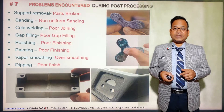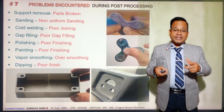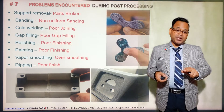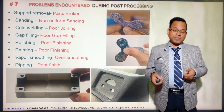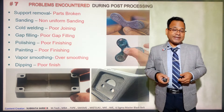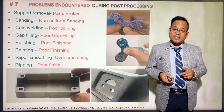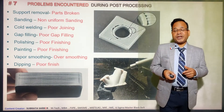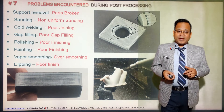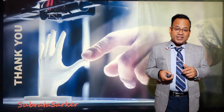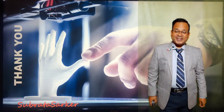In step seven, post-processing after removal from the machine: the component needs to be cleaned, undesired supports removed, and the surface smoothed. Then primer, painting — metal painting, epoxy painting — or vapor cleaning, etc. Many processes are involved, mostly manual, some mechanized. These are the things that need to be taken care of in 3D printing. I hope you have got some idea of the problems people normally face in 3D printing. Thank you so much for your attention and time.